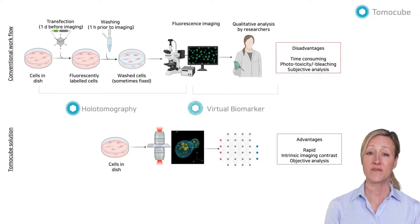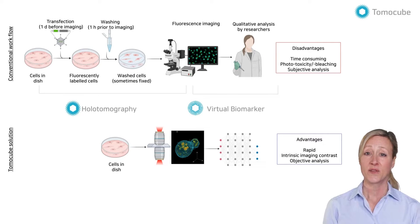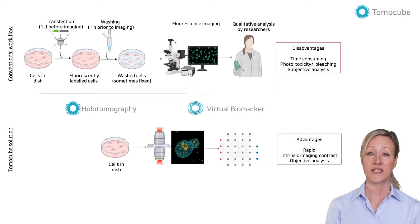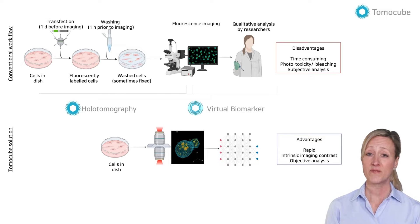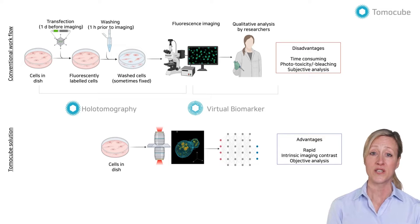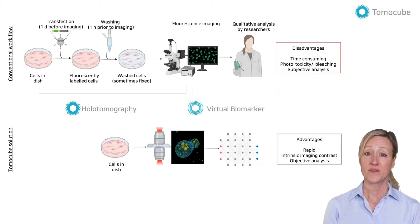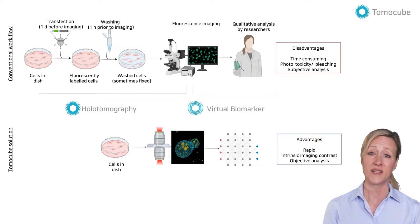Previously, you needed to follow several steps for cellular imaging, such as transfection for fluorescent protein expression or immunostaining. It also requires washing, incubation, and fixation. These procedures are not only time-consuming but also inevitably cause phototoxicity or photobleaching. One crucial issue is that cells are significantly modified from their native states, which should be avoided for long-term live cell assays in numerous fields, such as neuroscience and cell therapy.